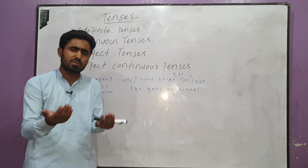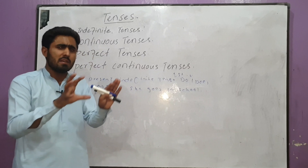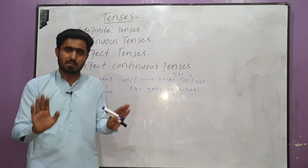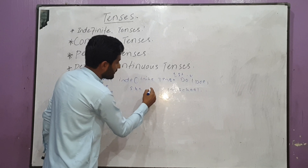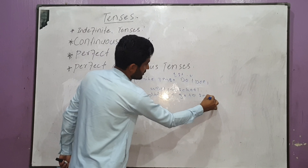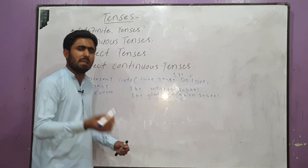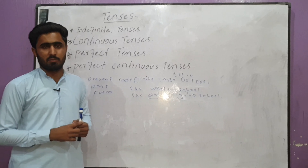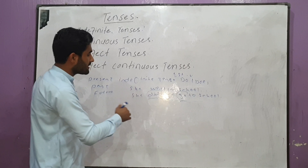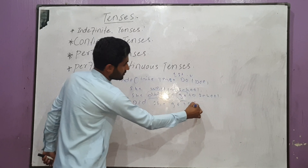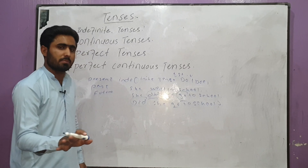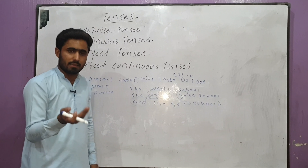Past indefinite tense: an action started in the past and completed in the past. Two things — helping verb 'did', and the second form of the verb is used. For example: 'She goes to school' becomes 'She went to school' in past indefinite. Negative: 'She did not go to school.' Interrogative: 'Did she go to school?' Because 'did' is a helping verb and is itself the second form of 'do', that's why the main verb returns to first form.